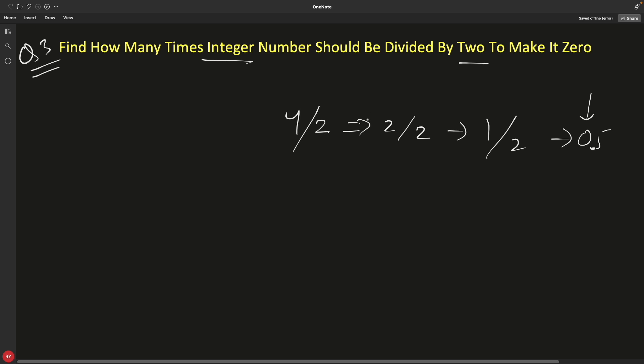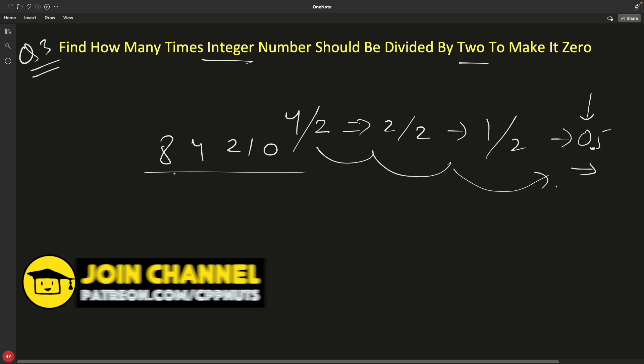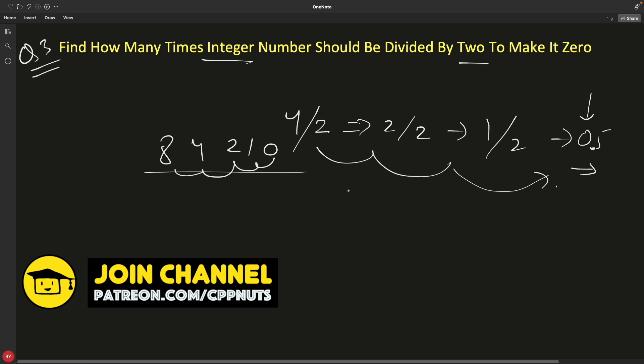To make this four reach to zero while dividing it by two takes three counts. So this is first, this is second, and in the third count you reach to zero. Similarly, if it is eight, then you will be reaching zero with four counts: eight, four, two, one, and zero.